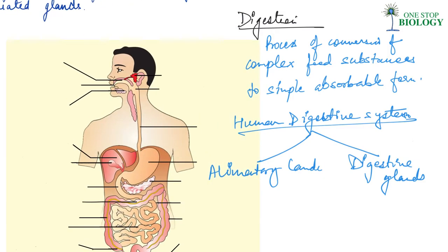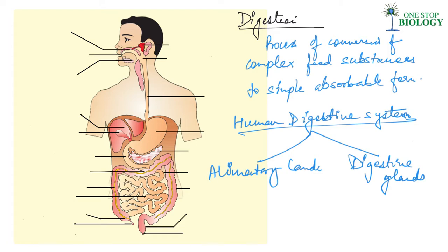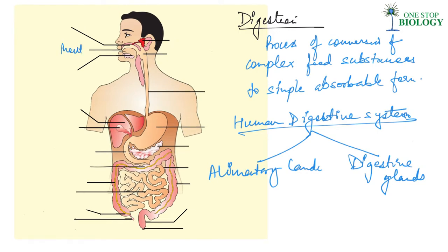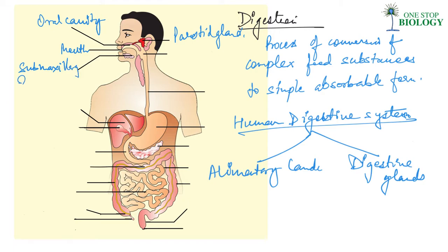If you see the diagram here, and if you have to label all of these parts, you will understand what exactly the human digestive system is. It starts off with the oral cavity, and the oral cavity starts with the mouth. Then you have some glands in the oral cavity — nearby the ear is the parotid gland, and then towards the jaw you have the submaxillary and sublingual glands. The mouth then goes into the esophagus, and the esophagus joins with the stomach.